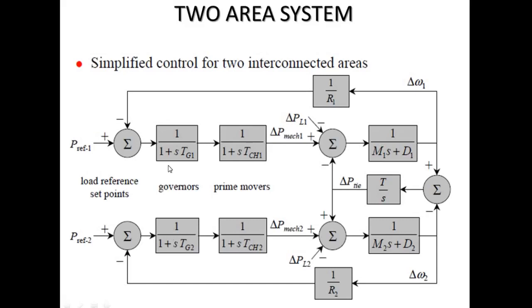Now we see the modeling of the two-area system in the block diagram. The upper half is the LFC model for area 1 and the lower half is for area 2 — both derived from previous lectures on single-area LFC. The extra element included is the tie line model: ΔP_tie = (2π·T12/s) · (ΔF1 − ΔF2). The frequency responses from both areas are summed and passed through an integrator block to produce the change in tie line power, which becomes one of the inputs to both area 1 and area 2. This completes the block diagram representation of the two-area system with tie line modeling.